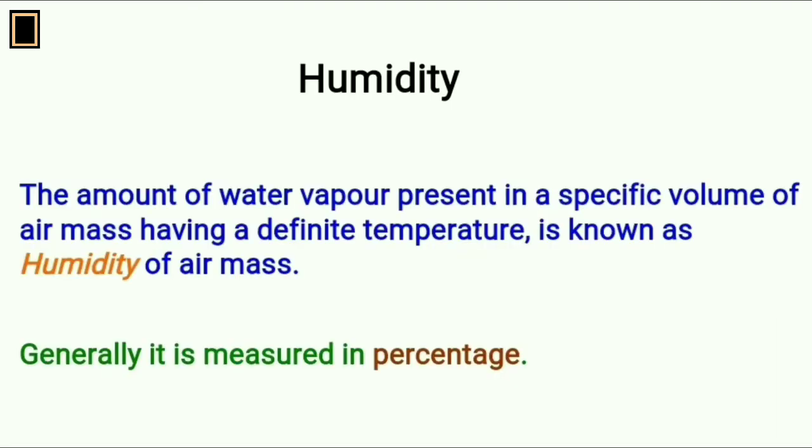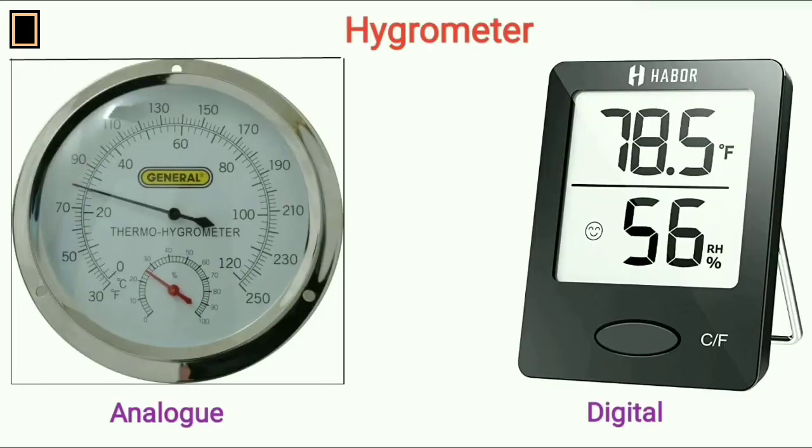Humidity: The amount of water vapor present in a specific volume of air mass having a definite temperature is known as humidity of air mass. Generally, it is measured in percentage. Humidity of an air can be measured by hygrometer. It is of two types: analog hygrometer and digital hygrometer.